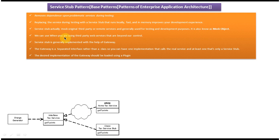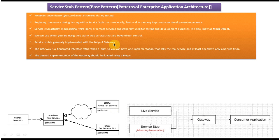Fourth point: we can use the Service Stub when we are using third-party web services that are beyond our control. If that third-party web service is not available and we don't know when it will be delivered, we can go for this Service Stub pattern. The next point is that the Service Stub is generally implemented with the help of the Gateway design pattern. I have created a separate video for the Gateway design pattern on my channel. In short, a consumer application calls the Gateway, and the Gateway decides whether to call the live service or the Service Stub based on a condition written in the Gateway.